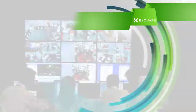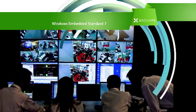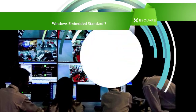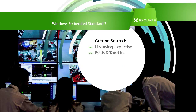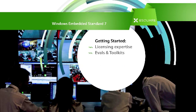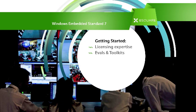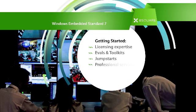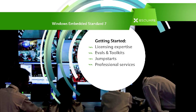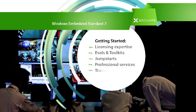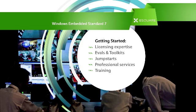If you're ready to get started on your Windows Embedded Standard 7 development project, B-Square can provide guidance on licensing strategy or can provide evaluation copies or toolkits. If you need assistance building your image, B-Square can provide a jumpstart or other professional services and support. As a Windows Embedded training partner, our Windows Embedded Standard 7 course will provide you with the technical skills to develop your embedded solutions.